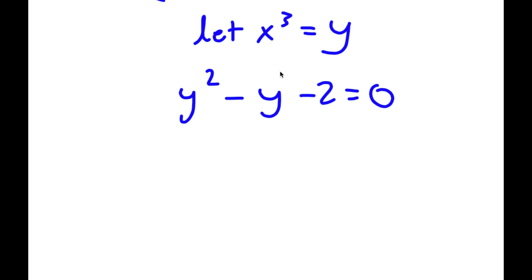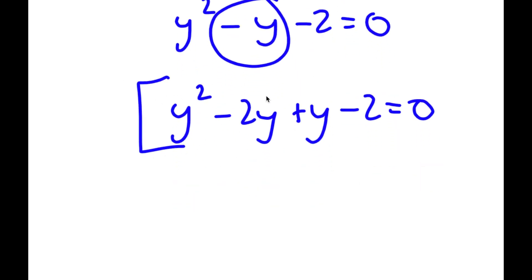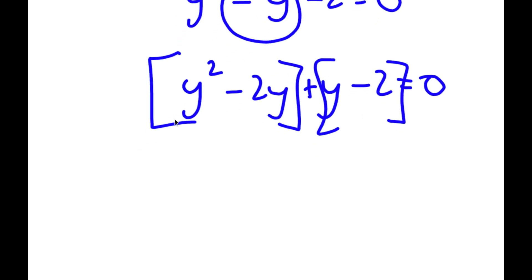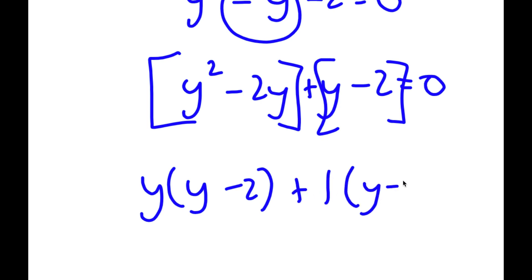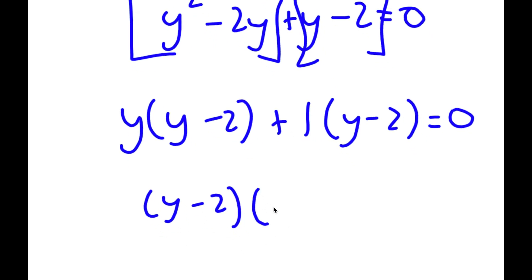To solve this, I'm going to write negative y here as negative 2y plus y. So now I'm going to factor by grouping. If I factor out y from y squared minus 2y, and factor out 1 from y minus 2, I get y times y minus 2 plus 1 times y minus 2 is equal to 0. So now if I factor out y minus 2, I get y minus 2 times y plus 1 is equal to 0.